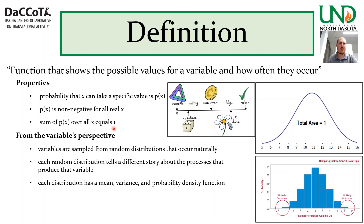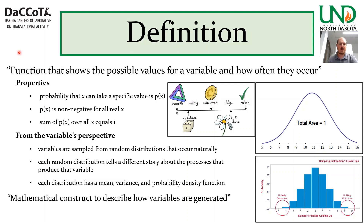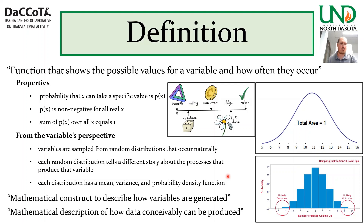There are a couple more ways to define this. First: a mathematical construct describing how variables are generated. Third — and the most memorable way I learned it in my thesis course — is a mathematical description of how data conceivably can be produced. So all three — function, construct, description — are different ways of defining and explaining what a statistical distribution is.